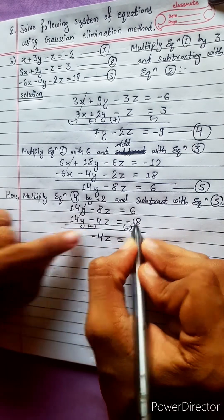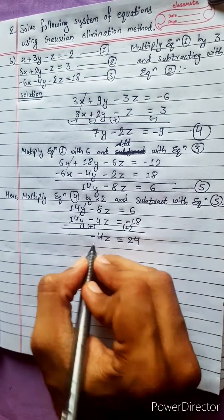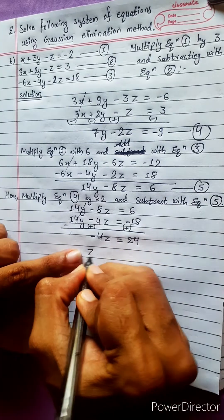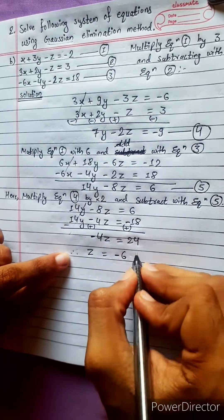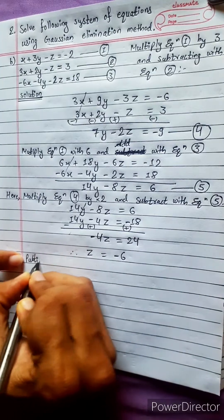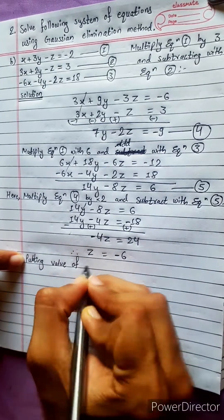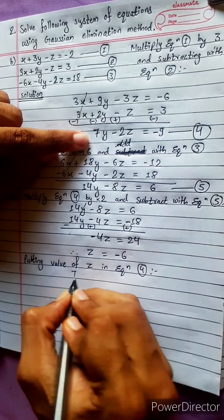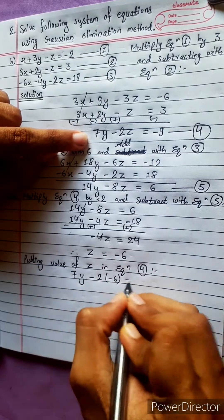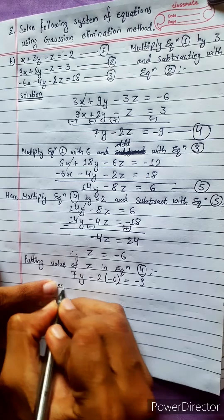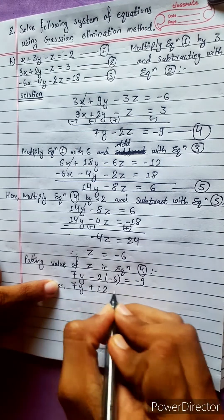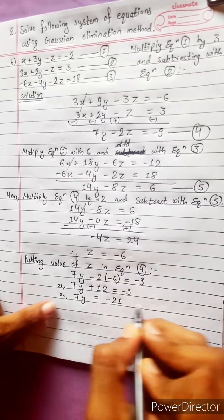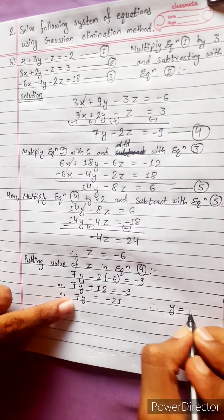After simplification, 24 divided by 4 gives z equals negative 6. Putting the value of z into equation 4: 7y minus 2 times negative 6 equals negative 9, so 7y plus 12 equals negative 9, giving 7y equals negative 21, therefore y equals negative 3.